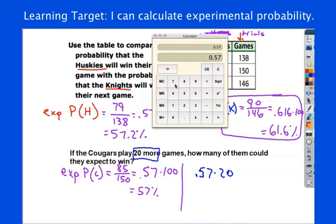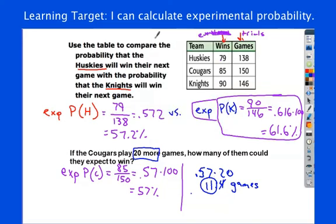Which comes out to 11.4 games. So, you can just chop that 4 off. There they will win. We would expect them. If they played 20 more, we would expect them to win 11 games. 11 out of those 20. So, just a little example to show you the application of experimental probability.